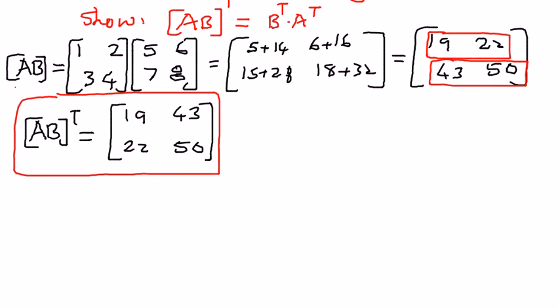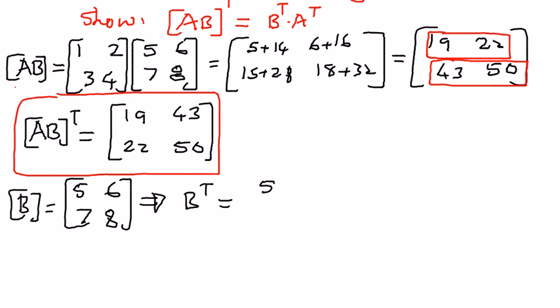Then we will come back and see if we can do the second part of the problem. If B is the matrix 5, 6, 7, 8, the transpose of this matrix is going to be as follows. B transpose is going to be equal to 5, 7, 6, 8.